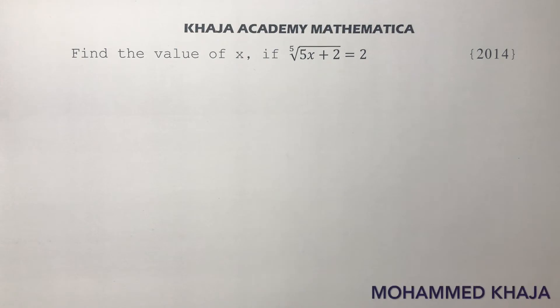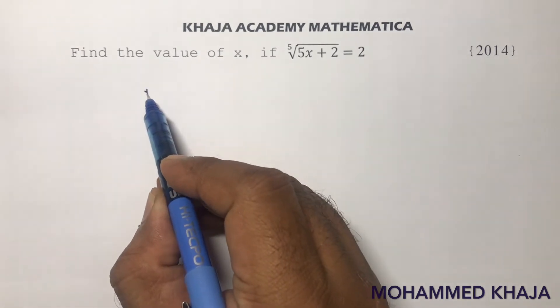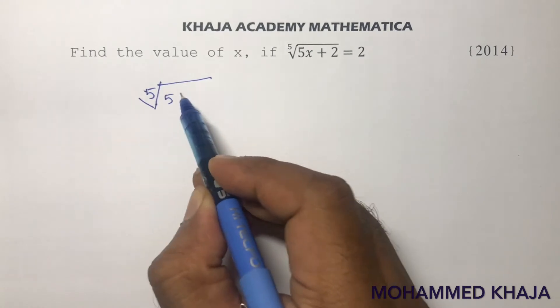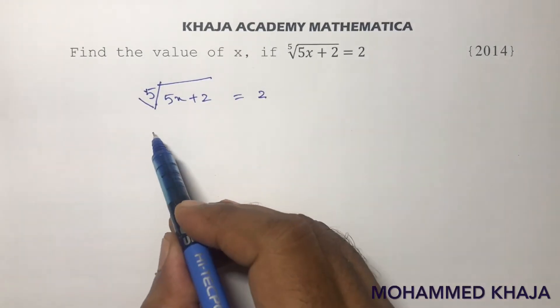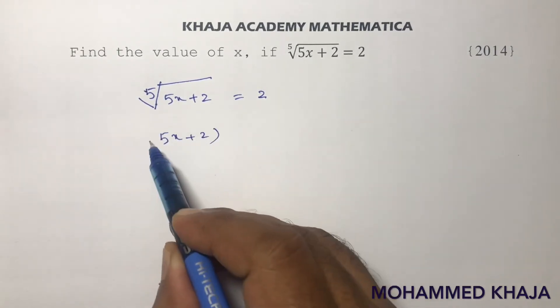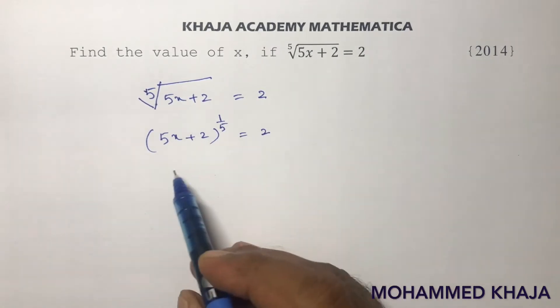Find the value of x if 5th root of 5x plus 2 equals 2. Here it is, 5th root of 5x plus 2 equals 2. Now, see here, 5th root we can write as 5x plus 2 whole power 1 by 5 equals 2.